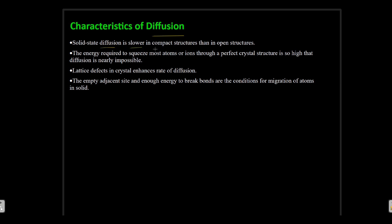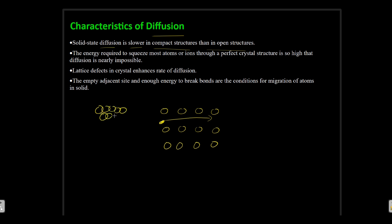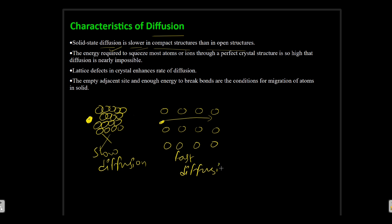The first characteristic is that solid state diffusion is slower in a compact structure than in an open structure. If atoms are farther apart and open, an atom or ion will easily migrate. But if the atoms in a crystal lattice are very compact, it will be much more difficult, resulting in slow diffusion. Open structures allow fast diffusion.